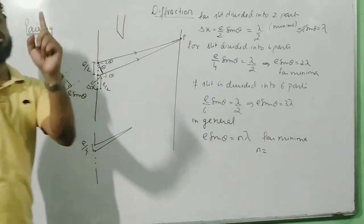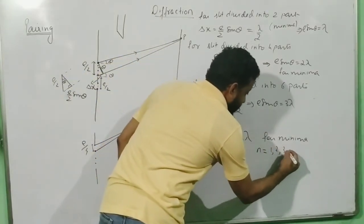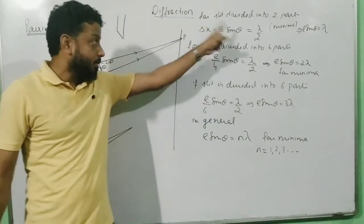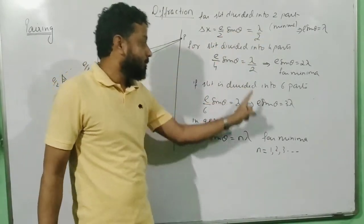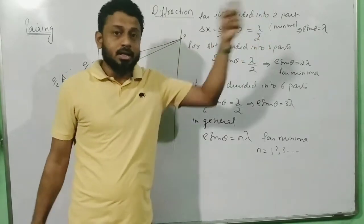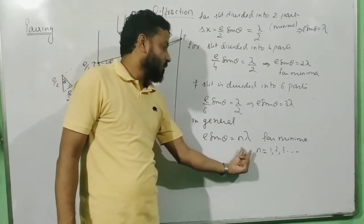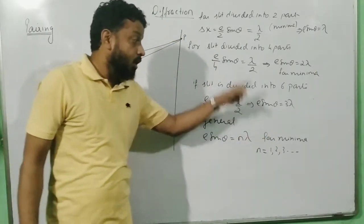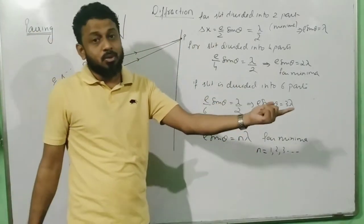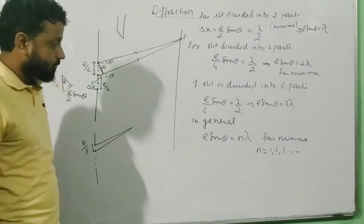Remember — for Young's double slit experiment, D sinθ = Nλ is for maxima, but for diffraction, e sinθ = Nλ is for minima, where e is the slit width. We started with λ/2 as the condition, but due to the symmetry of e/2, e/4, e/6, the overall formula came out as e sinθ = Nλ for minima. This is what the exam has asked to derive.